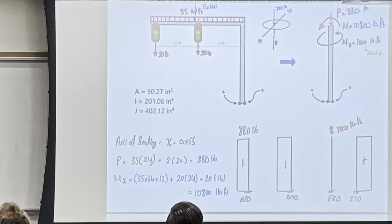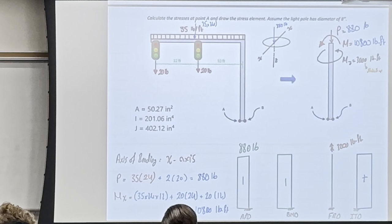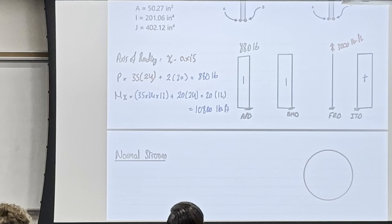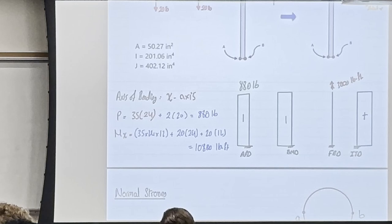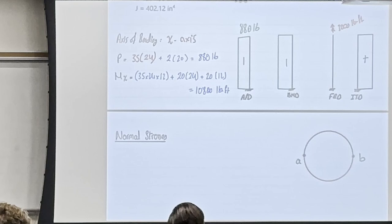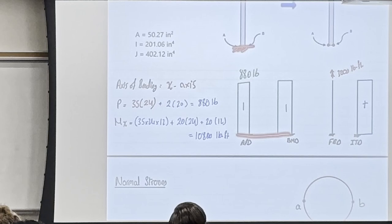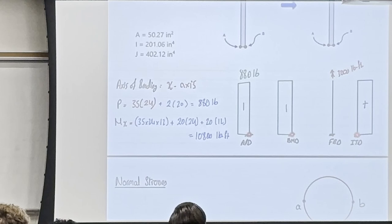Now let's focus on stresses, because the whole point is to find the state of stress at A. To find the state of stress at A, we go over everything. If I draw the cross section of the column at the bottom, point A is here and point B is here. I'll put the bending moment on that cross section. At point A we have an axial compression force of 880 pounds applied at the centroid. The column is a solid circle with diameter 8 inches.